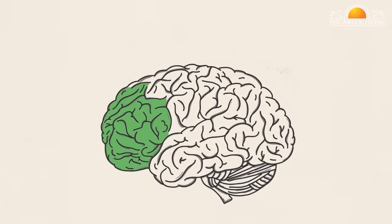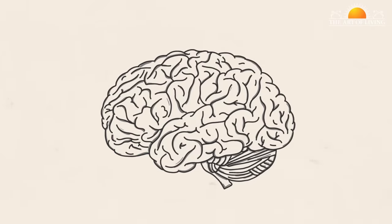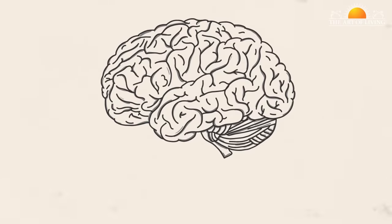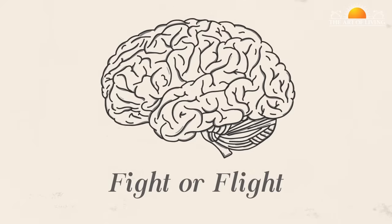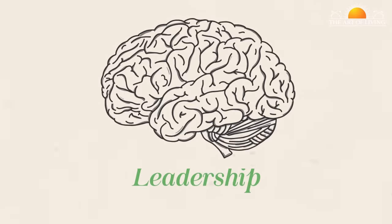In the absence of a healthy vagus nerve, we only end up having access to parts of our brain that control primal instincts like fear and fight or flight response. Hence, a healthy vagus nerve is essential for leadership and decision making.